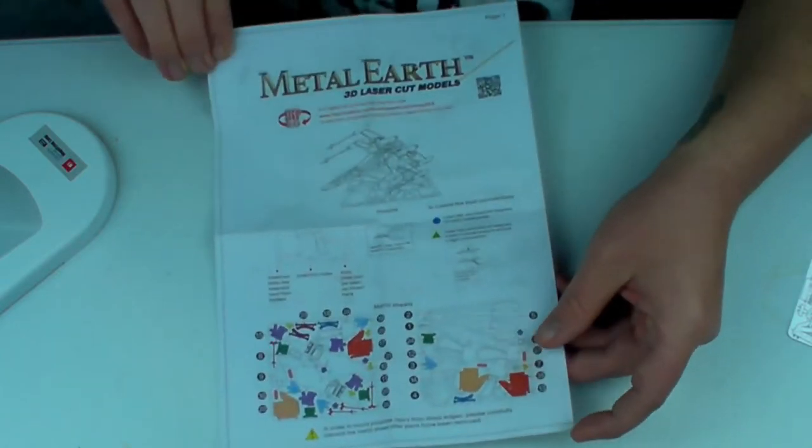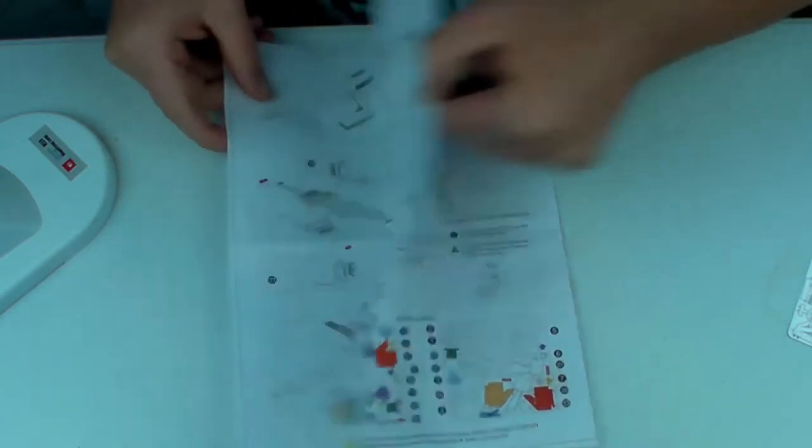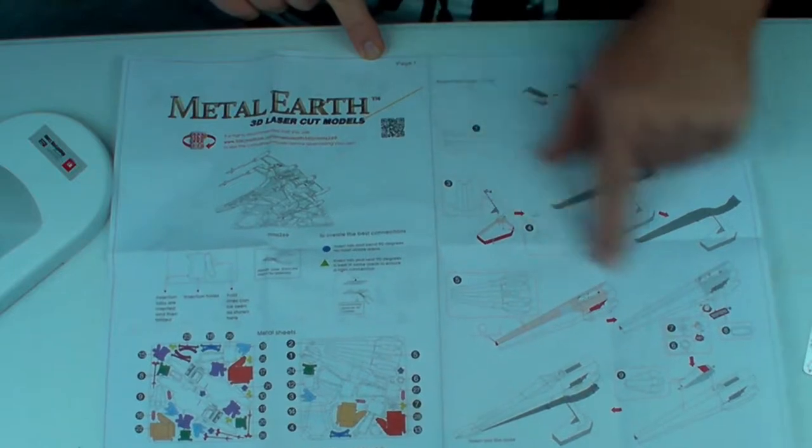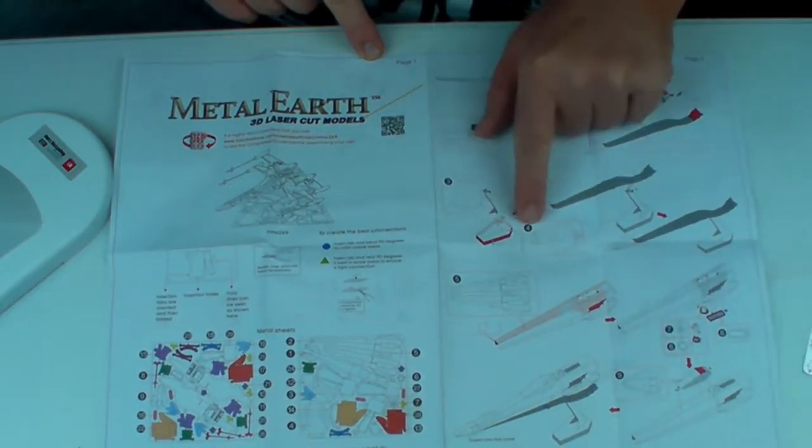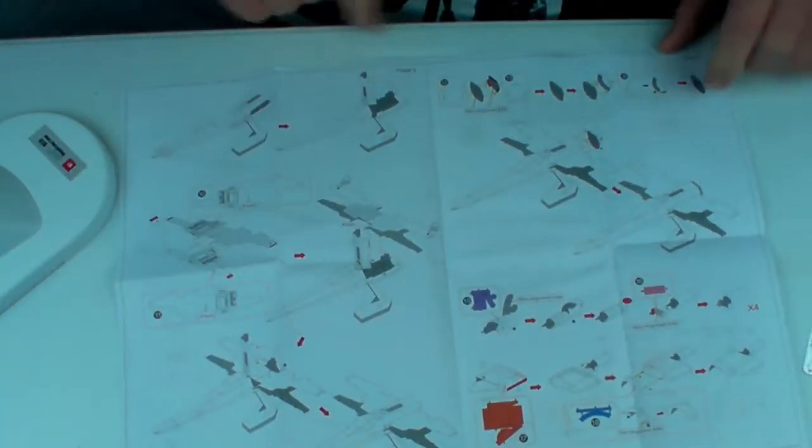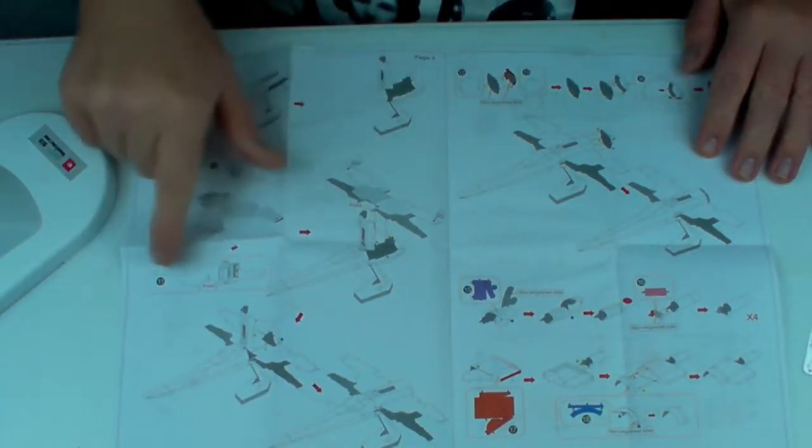But this doesn't open up like a book like you would expect. You actually open it the wrong way and flip it. There's page one, page two, this is where you start. You pretty much go in the order of the number of parts. Here's three and four, ten, eleven, so on and so forth.